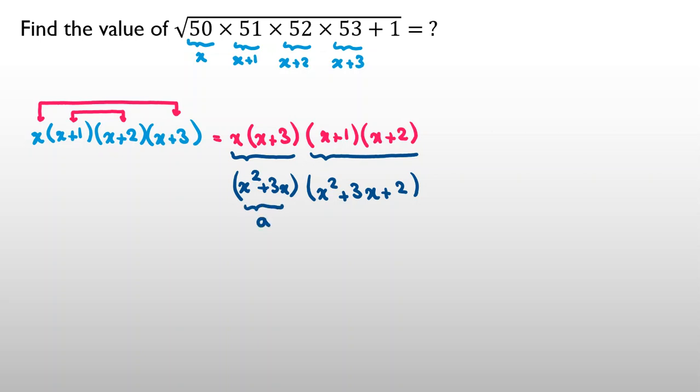I consider this part as x squared plus 3x. Or let's call this one y. And this part will be y, so it will be y plus 2. It will be y times y plus 2. This part is y times y plus 2.